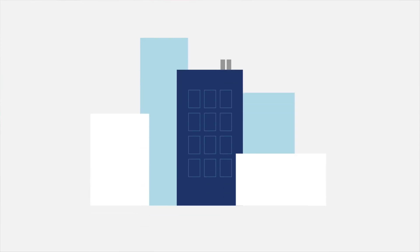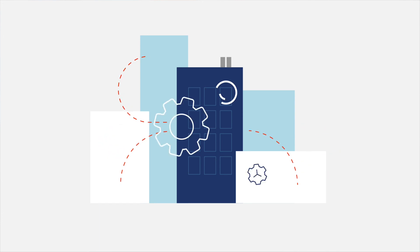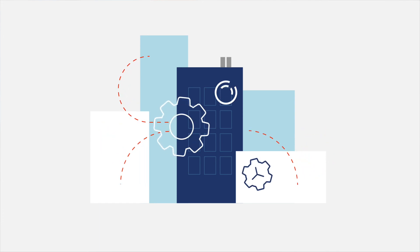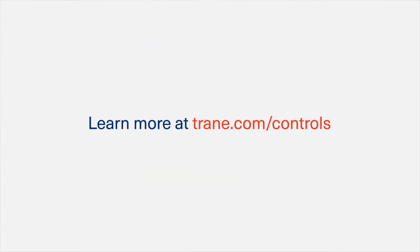Getting your building set up to communicate with you can be complex, but it doesn't have to be. Trane can help you create a customized mix of protocols and topologies to give you exactly what you need. We'll create a plan that balances cost, reliability, speed, and performance. We'll work with you to make sure your network can grow and change as your needs evolve. If you're ready to benefit from everything your building has to say, talk to your Trane account manager today.